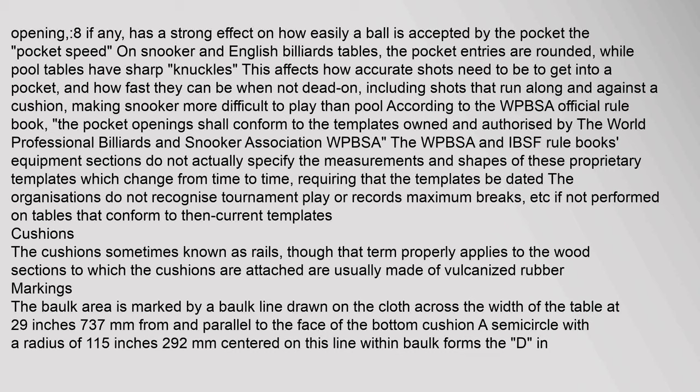On snooker and English billiards tables, the pocket entries are rounded, while pool tables have sharp knuckles. This affects how accurate shots need to be to get into a pocket and how fast they can be when not dead on — including shots that run along and against a cushion — making snooker more difficult to play than pool. According to the WPBSA official rule book, the pocket openings shall conform to the templates owned and authorized by the WPBSA. The WPBSA and IBSF rule books do not actually specify the measurements of these proprietary templates, which change from time to time, requiring that the templates be dated. The organizations do not recognize tournament play or records if not performed on tables conforming to then-current templates. The cushions are usually made of vulcanized rubber. The baulk area is marked by a baulk line drawn on the cloth across the width of the table at 29 inches (737 mm), where the cue ball must be placed when breaking or after the cue ball has been potted.